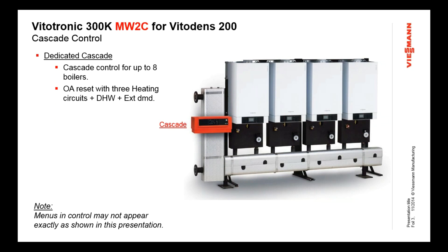The MW2C control is a dedicated master control — it is only a cascade control. It doesn't have any direct boiler control because there's no boiler connected to it. As you can see, it attaches to the manifold or can be mounted on the wall. It supports up to eight individual boilers in the group. This is a very flexible system using the same touch control interface that the CM2 does through the GW6B, but it's just a cascade control.